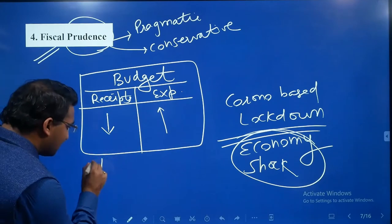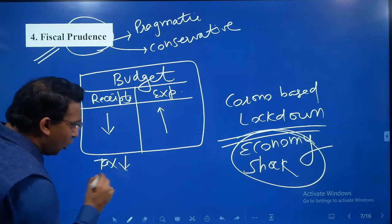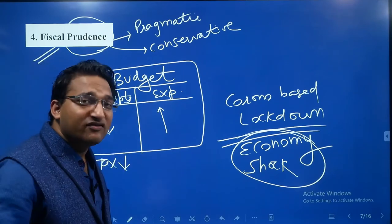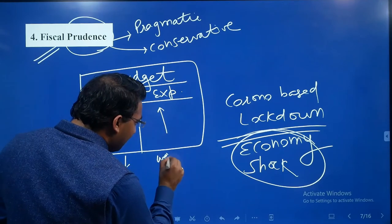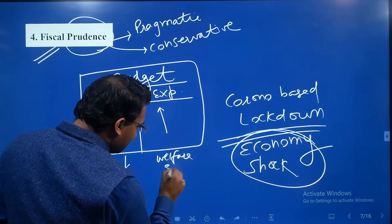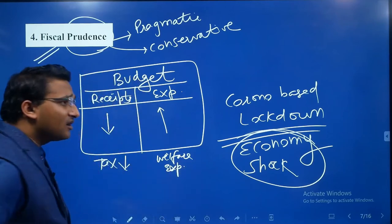Because of this, the government's tax receipts are coming down because no production is happening, no income tax will be paid. But expenditure is increasing because the government will pay welfare expenditure to migrant workers, farmers, and other stakeholders.